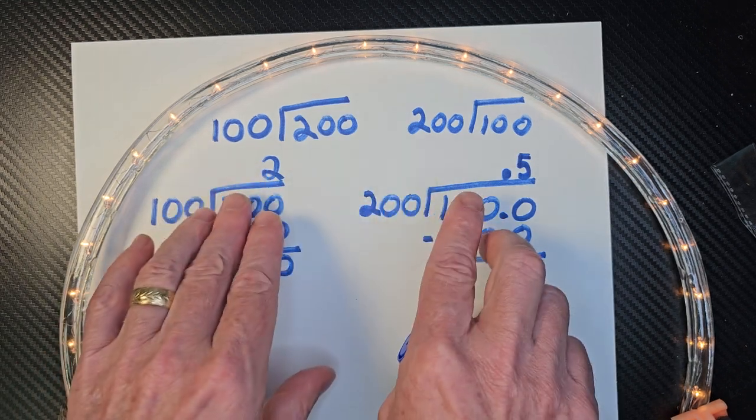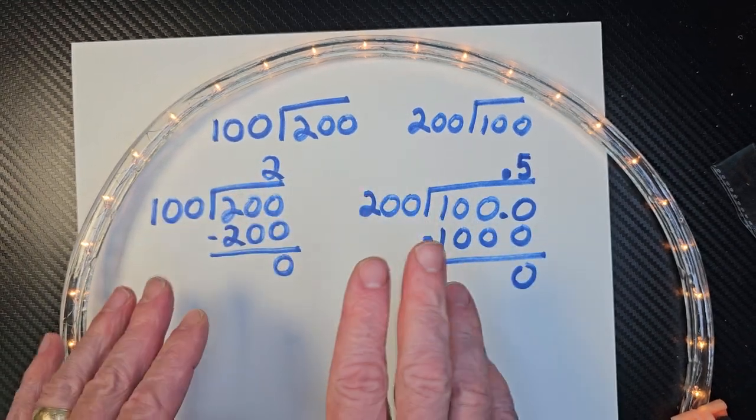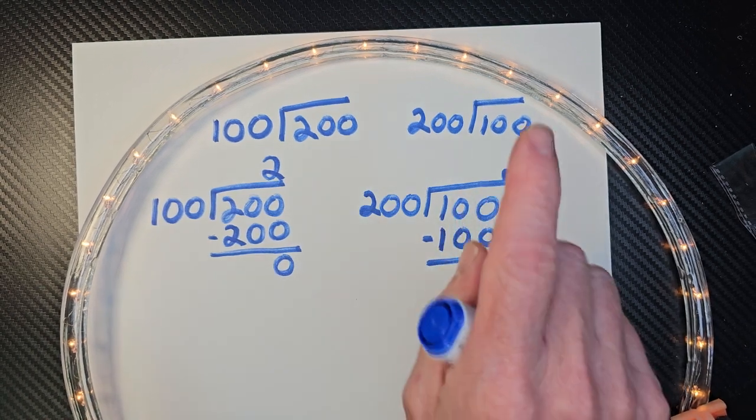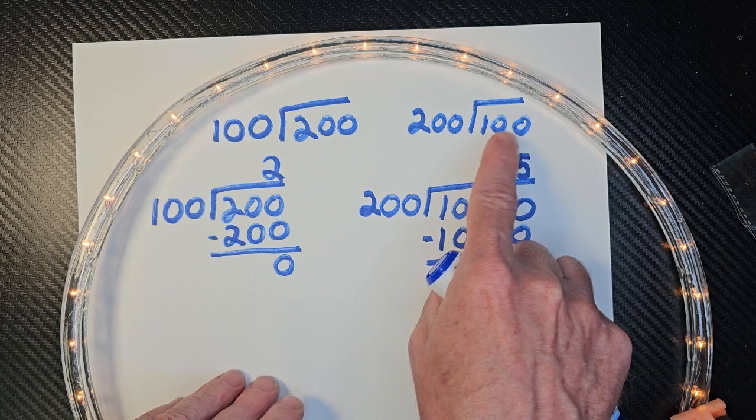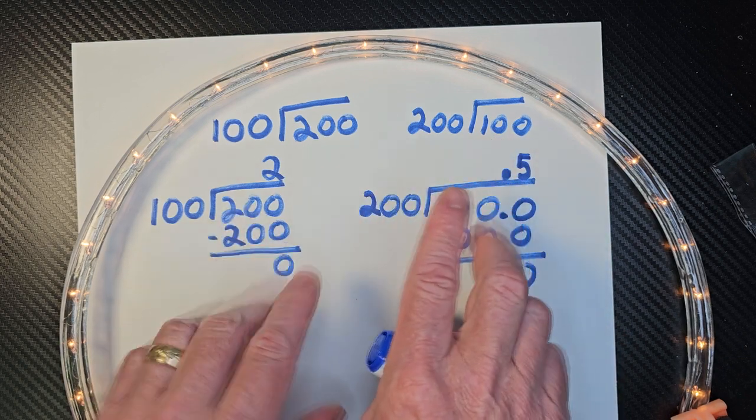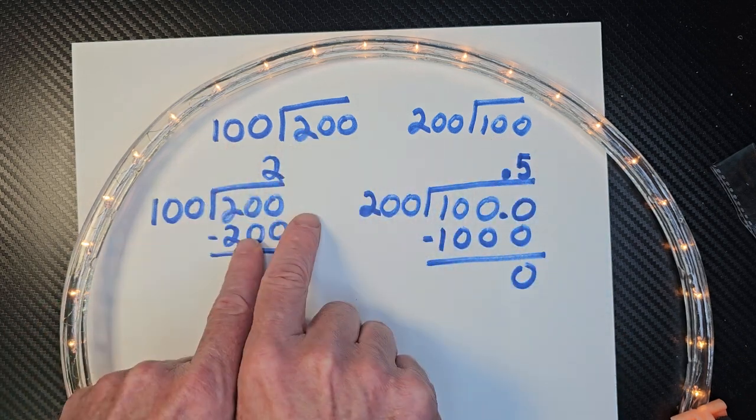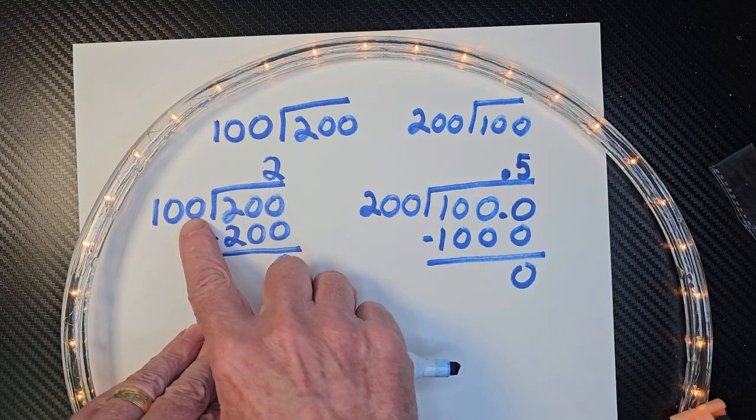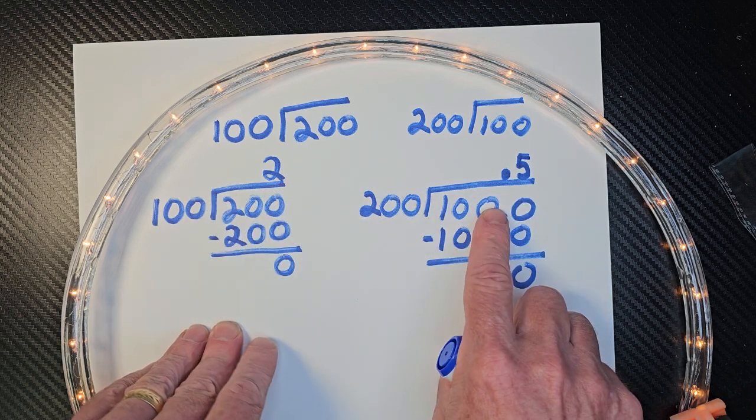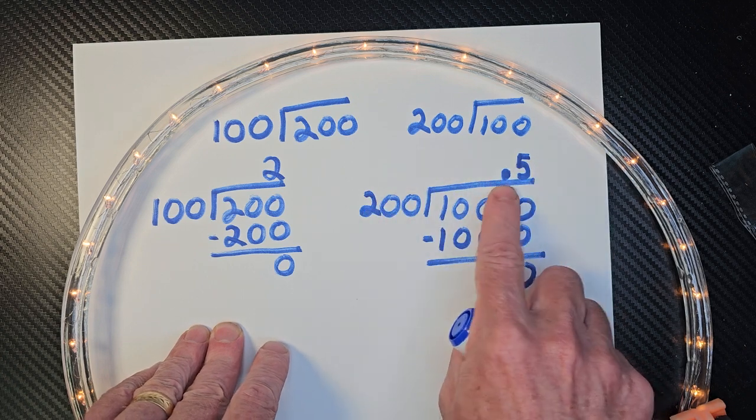So I did this problem because I had a student ask, what is 100? Or they asked, what is 200 divided by 100? And they wrote it like this. And I said, no, it would be, this is how you would write it. So we have two different answers. 200 divided by 100 is 2, and 100 divided by 200 is 0.5.